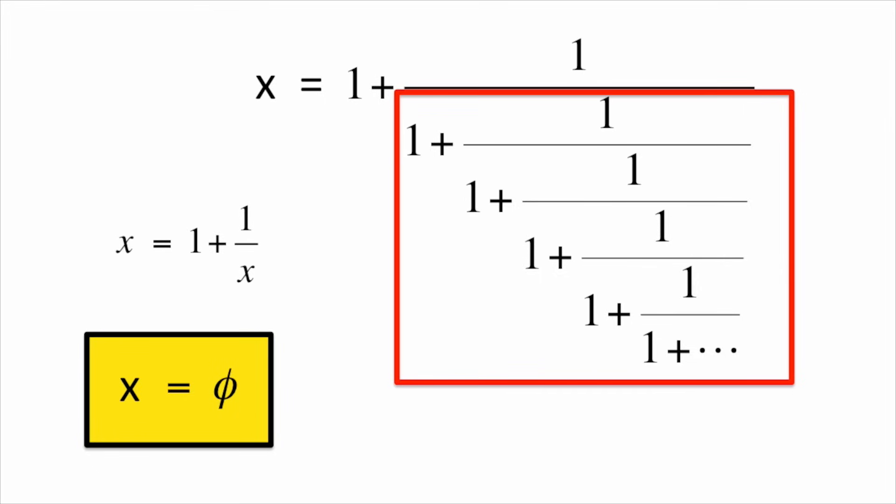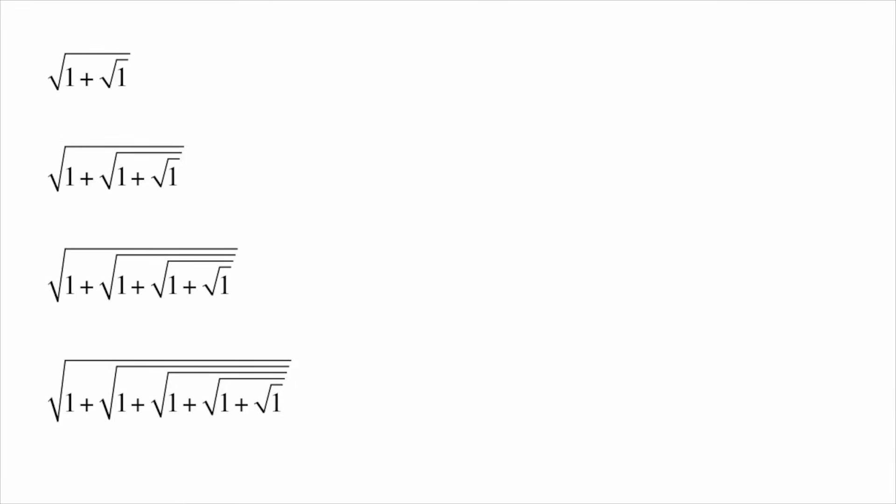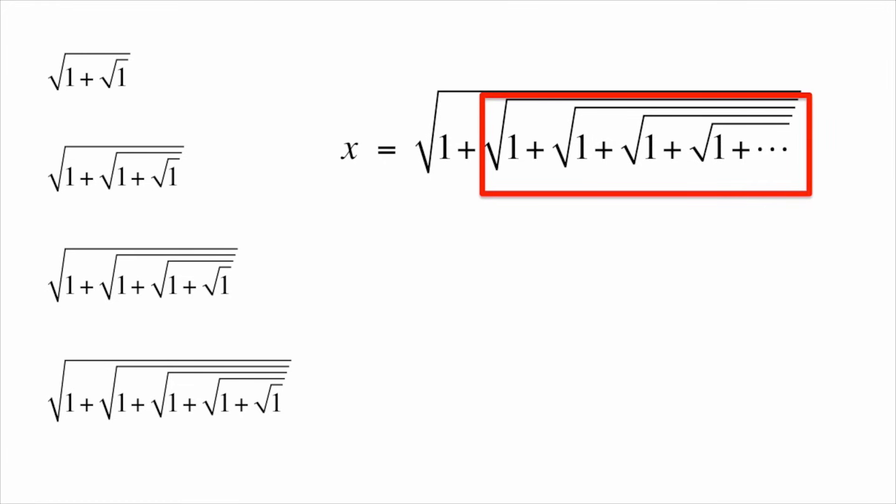Instead of nesting fractions, suppose we nest square roots. Borrowing the same trick, let x be the expression with infinitely many square roots, and recognize that the red box captures the original expression. So x satisfies this formula, which in turn produces Phi.